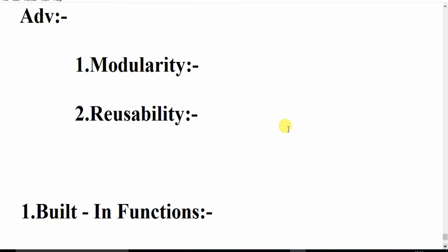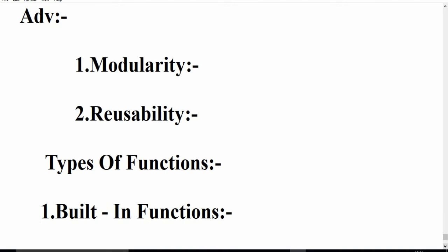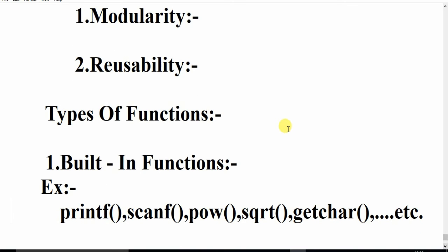Next are the types of functions. C language supports two types of functions: one is called built-in functions, and another is called user-defined functions. Built-in functions are functions that already exist and are already defined. Users do not need to write any code for them — examples include printf, scanf, sqrt, and pow. These functions are already available and we simply call them in our programs without rewriting their statements.